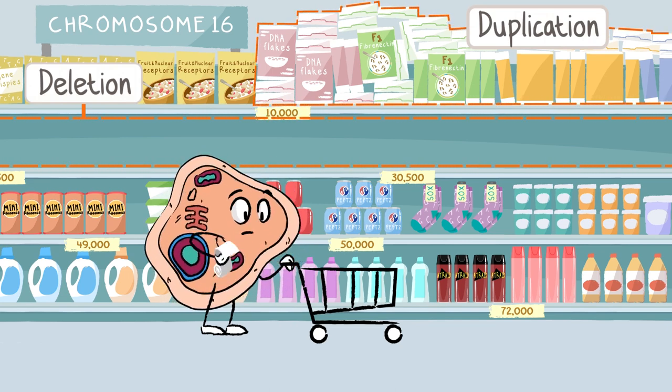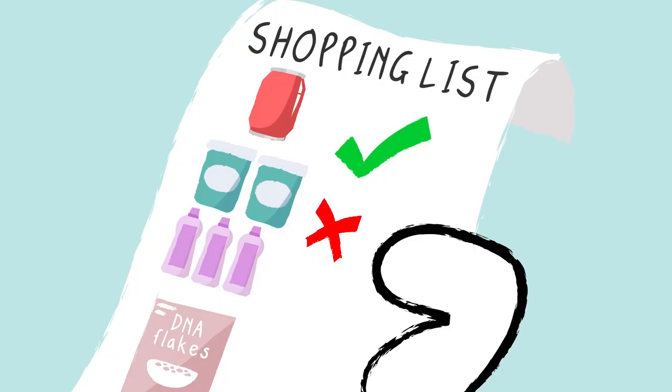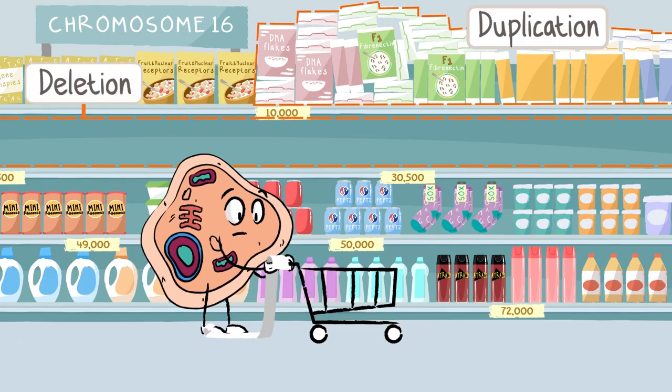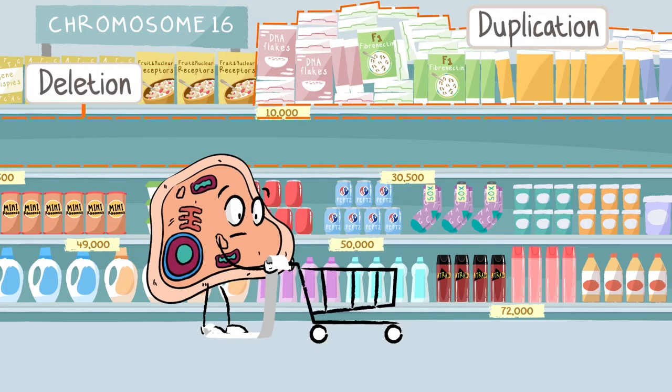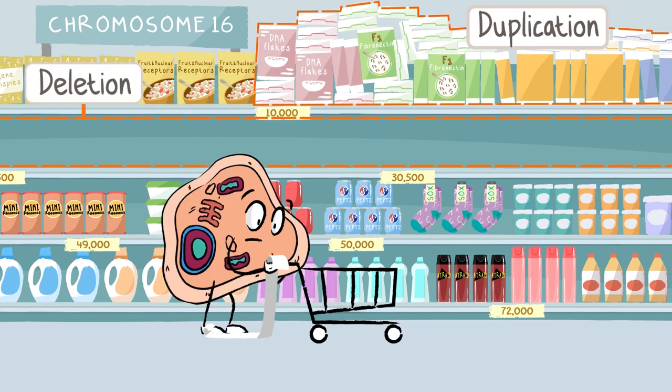Empty and overstocked sections can make it difficult for some cells to get the products they need, which can make it harder for them to do their job in the body.